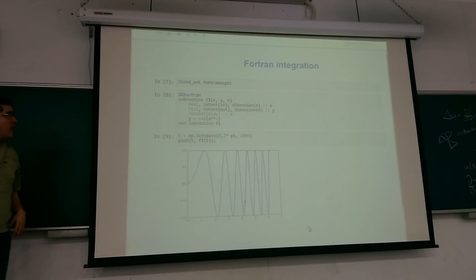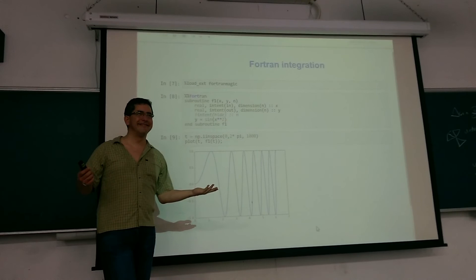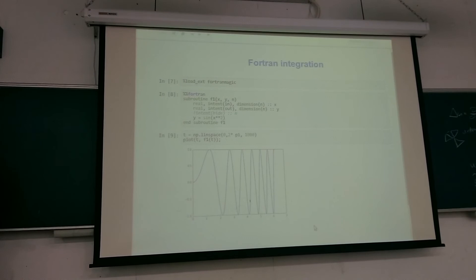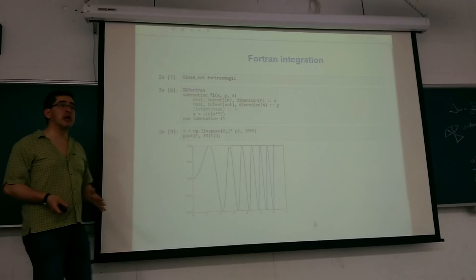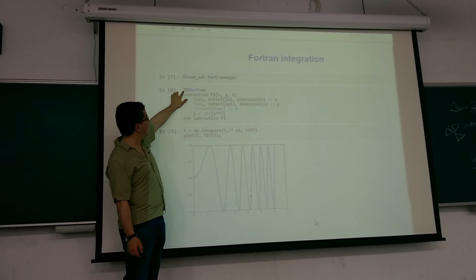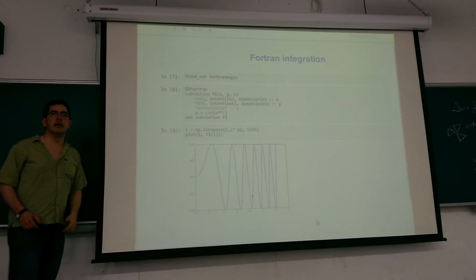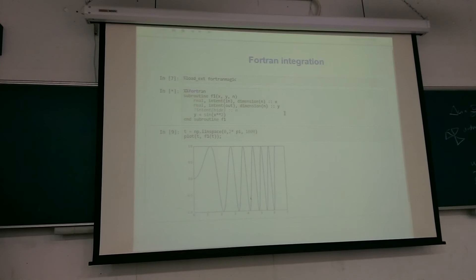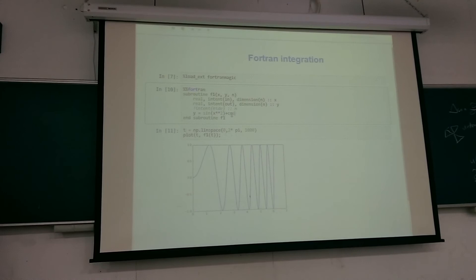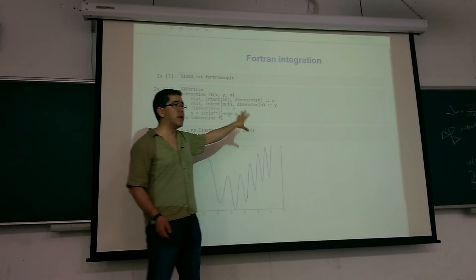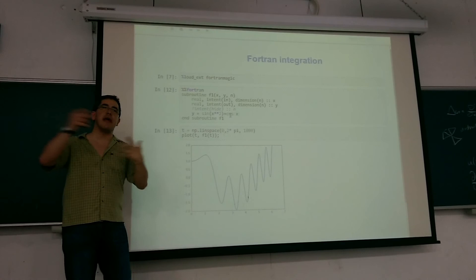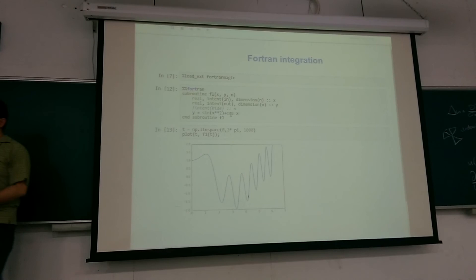I can also use Fortran. Fortran is mostly used in high-performance computing — physicists, applied mathematicians, computational chemists, climate modelers — because it provides very high performance for purely numerical computing. If I say '%%fortran', that block of code is compiled as Fortran and I can use it like a Python script. IPython calls the Fortran compiler and brings that code back so I can use it as part of a Python plotting call, as if it were yet another scripting language.